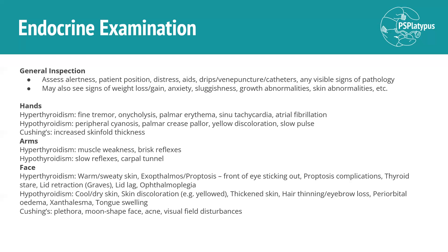In Cushing's, you might see increased skin fold thickness in the hands. Moving up to the arms, in hyperthyroidism you might see muscle weakness and brisk reflexes, while in hypothyroidism you might have slow reflexes and symptoms of carpal tunnel syndrome. In the face with hyperthyroidism, you might see warm, sweaty skin, exophthalmos, proptosis, thyroid stare, lid retraction, lid lag, and ophthalmoplegia. In hypothyroidism, you might see cold, dry skin, skin discoloration, thickened or thinning hair, eyebrow loss, periorbital edema, exophthalmos, and tongue swelling.